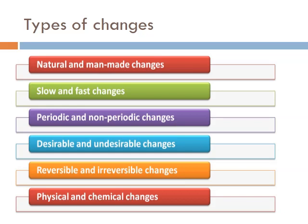The changes around us can be classified into various types: natural and man-made changes, slow and fast changes, periodic and non-periodic changes, desirable and undesirable changes, reversible and irreversible changes, and physical and chemical changes. Here we are mainly going to discuss reversible and irreversible changes.